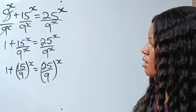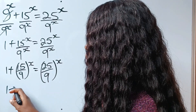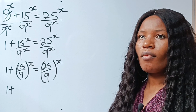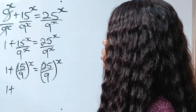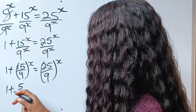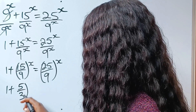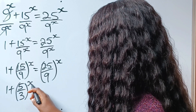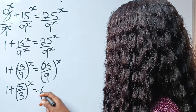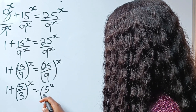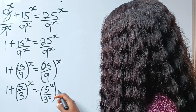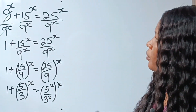Now we have 1 plus. This and this have a common factor, which is 3. So when 3 divides 15, we have 5. And when 3 divides 9, we have 3. So we have this to the power of x is equal to — now here we have 25 is same as 5 squared, while 9 is same as 3 squared, raised to the power of x.